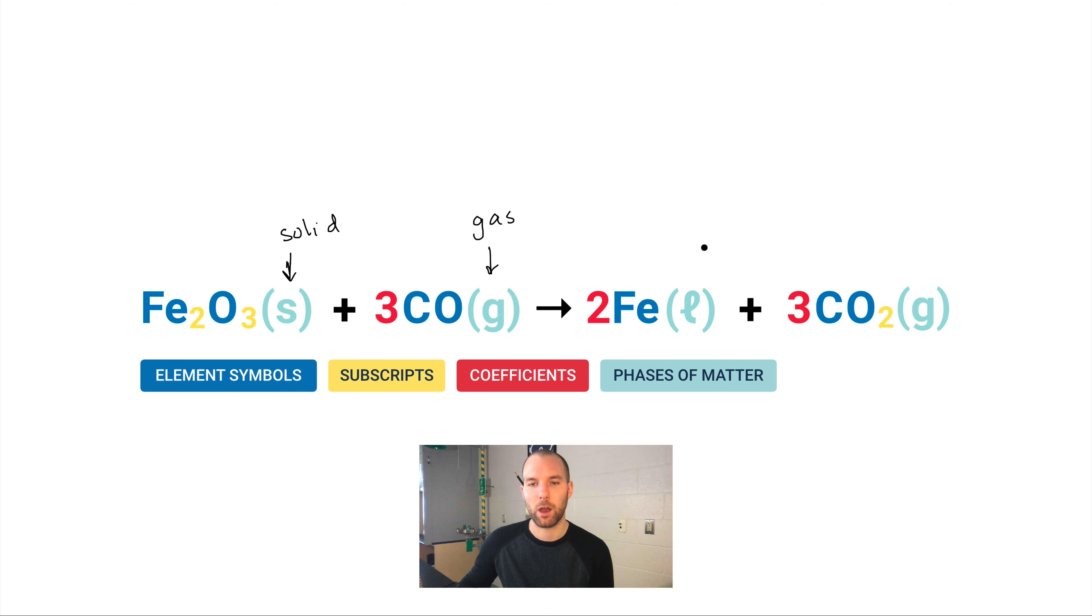G means gas, and a cursive L means liquid. It's cursive only because a regular lowercase L would look like iodine or it could look like a Roman numeral one. Now there is one other thing that could pop up, and that's AQ. AQ means aqueous, which means dissolved in water.